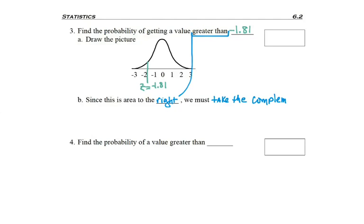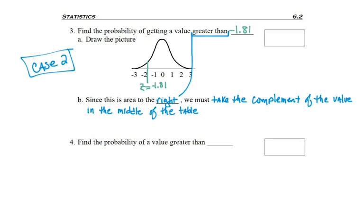But this means we must take the complement of the value in the middle of the table. We're looking at case 2. So I go to the table with negative 1.8 on the left, 0.1 on the top, and in the middle I find 0.0351. Actually, we just did it a few minutes ago, so I would have just taken that number and not looked it up again.